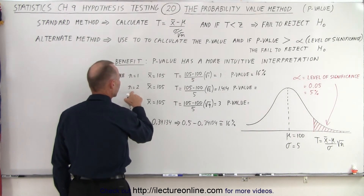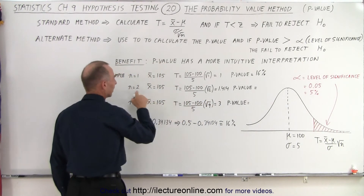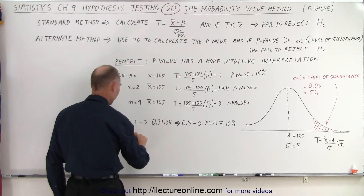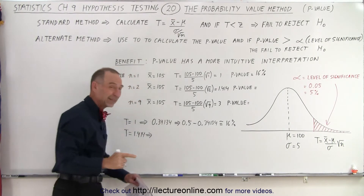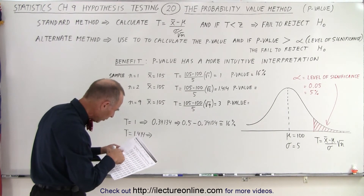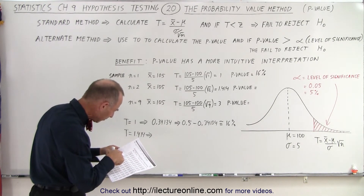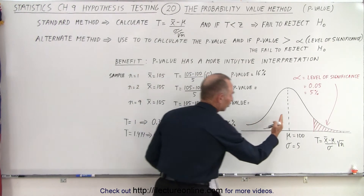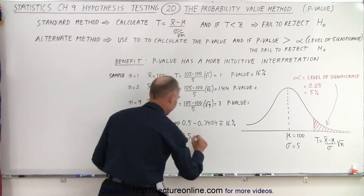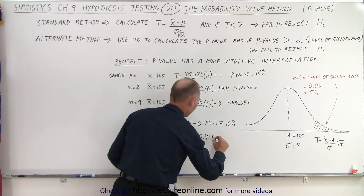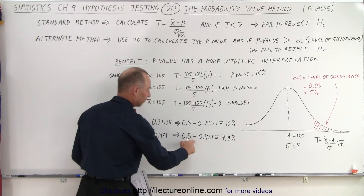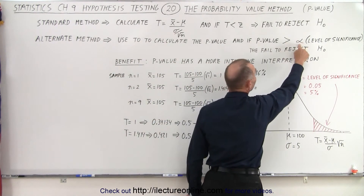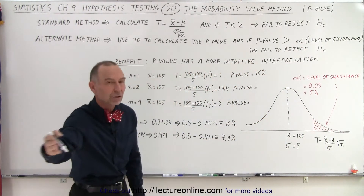When the sample size is equal to 2, we get a t-value of 1.414. We get a larger t-value only because we multiply by the square root of the larger sample size of 2. Looking up 1.414 in our table, we get approximately 0.421. We take 0.5 — half the right side of the normal distribution — and subtract 0.421, which gives us approximately 7.9%, just slightly less than 8%. Notice that 7.9% is still greater than the level of significance of 5%, so again we fail to reject the null hypothesis.